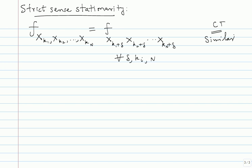Strict sense stationary is very strong. Typically in practice you are not worried about the full PDF. The kind of things you need to know are the mean value, the power, and the spectrum - the average power, average spectrum, and mean values. Those are the things critical to you when you design. You only need first and second order statistics for your entire random process, and that is enough to design systems. We will define those first and second order statistics.